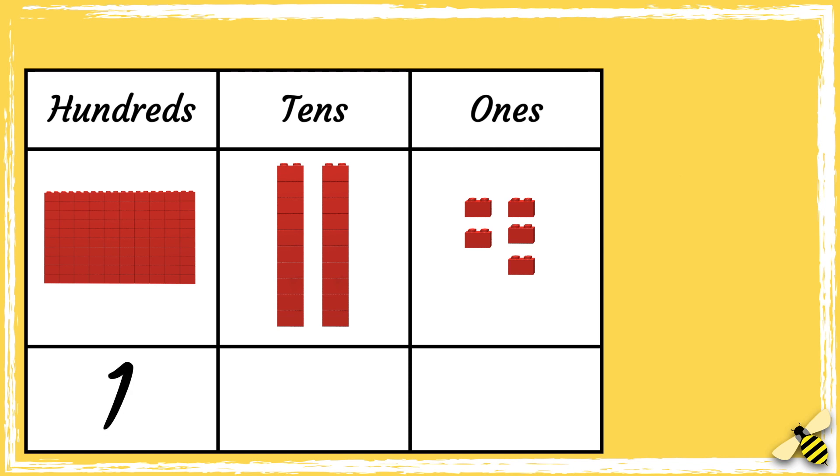There is one group of a hundred. Now we can look at how many groups of ten there are. There are two tens. Now we can look at how many ones there are. There are five ones.